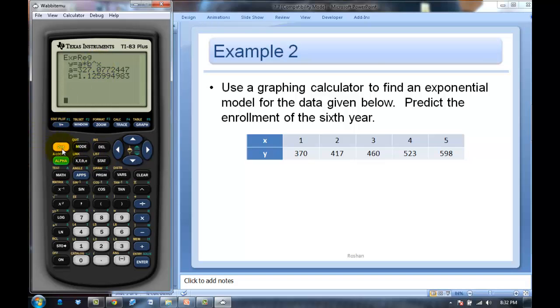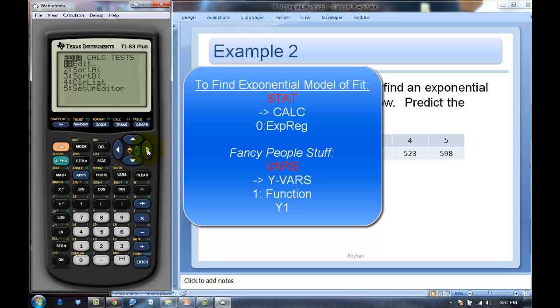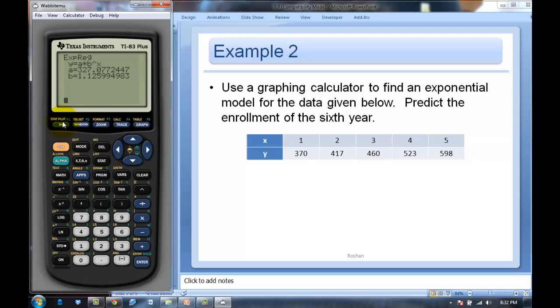And remember if you want to be all fancy you could have put this in y1. I'm going to just do it again. Go over to calc, go all the way down to zero which is exponential reg. If you want to be all fancy you go to the vars, you go over to the y vars function, put it in y1. I'm not requiring you to do that, but if you do it'll be all fancy. It'll put it in there, it'll draw the graph. You'll be so cool. Alright I might have gotten a little carried away there. But anyway.